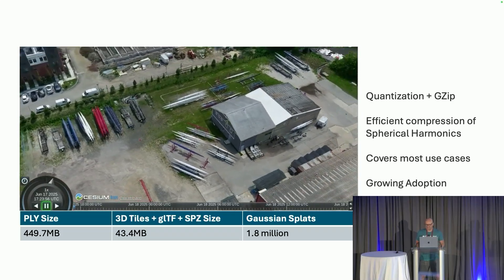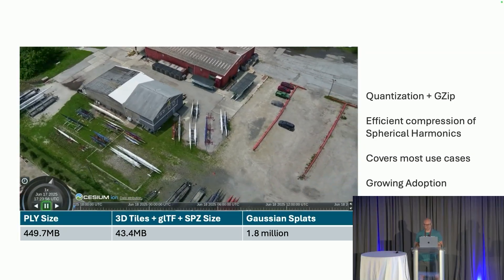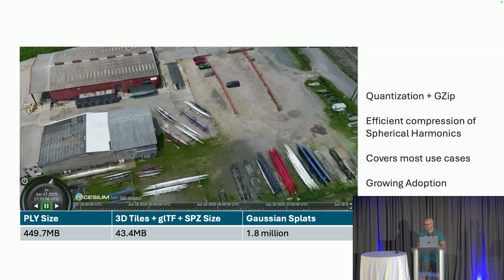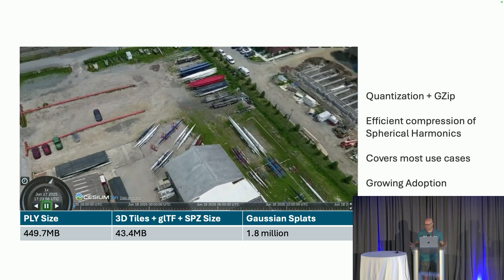SPZ stands for splat zip. They use various quantization techniques to make the data smaller and then gzip it. Primarily, it's their handling of spherical harmonic data that really got us excited. Mesh opt and other compression techniques are good for other data, but they really nailed spherical harmonics. You don't really lose a lot of detail given the file size — it covers most use cases and most users shouldn't see any major degradation. In this example, you have 1.8 million splats going from 450 megabytes down to 43 with 3D tiles, GLTF, and SPZ.